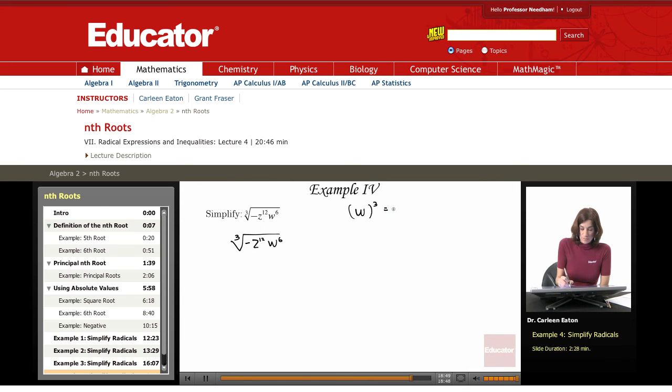That equals w to the 6th. And since 2 times 3 is 6, I know that the cube root of w to the 6th is w squared. Okay, so that handles that.